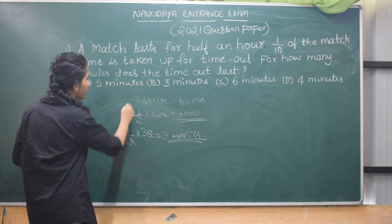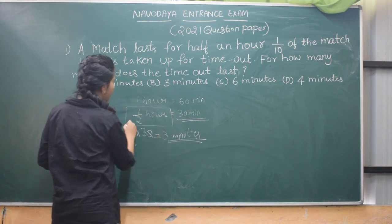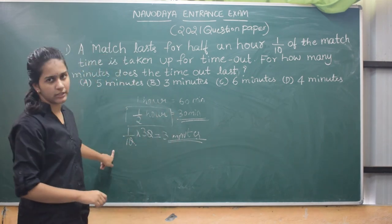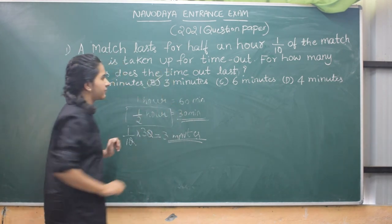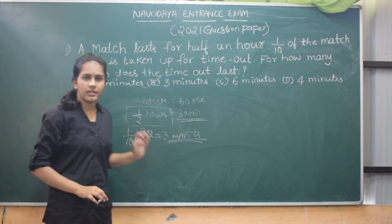So this is how you should find it. First you should know half an hour is 30 minutes, so 1 by tenth of 30 you should find. Then you will get the answer as 3 minutes. That's option B. This was a very simple question.